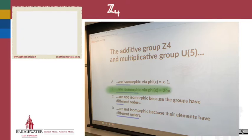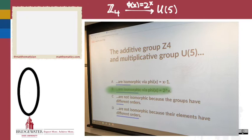So Z4 to U(5), the function φ(x) = 2^x mod 5. Somebody tell me, how do we know that function is an isomorphism between these two groups? I saw some hunters and arrows diagrams as I was walking around, which is encouraging.